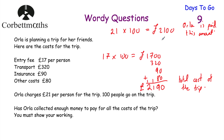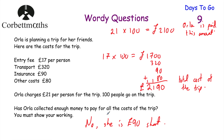The money she receives — £2,100 — isn't enough. She needs an extra £90. So the answer to 'Has Orla collected enough money?' is no. She's £90 short.